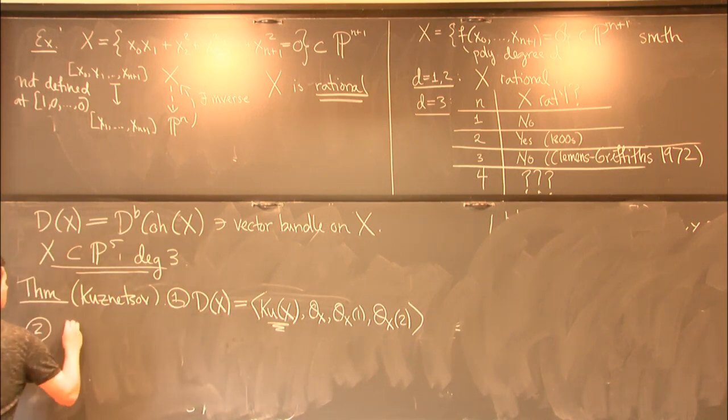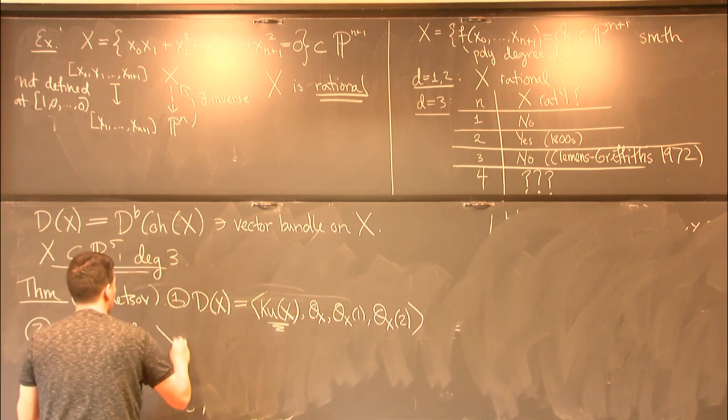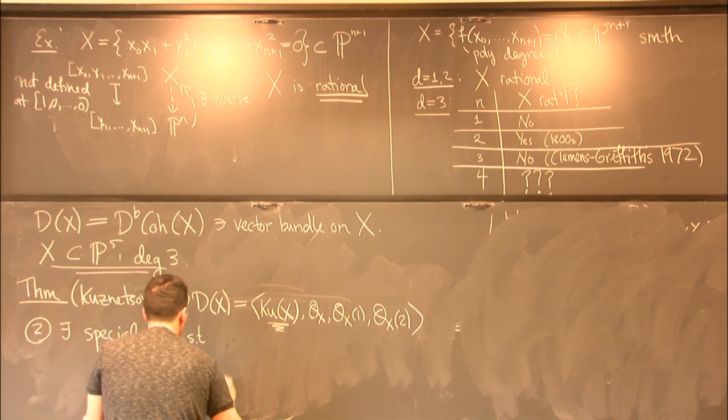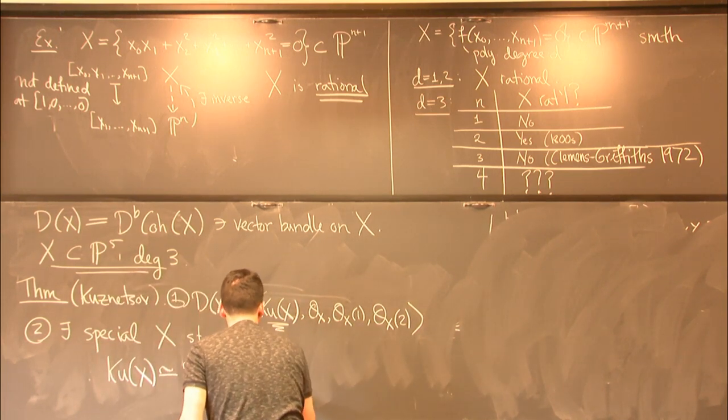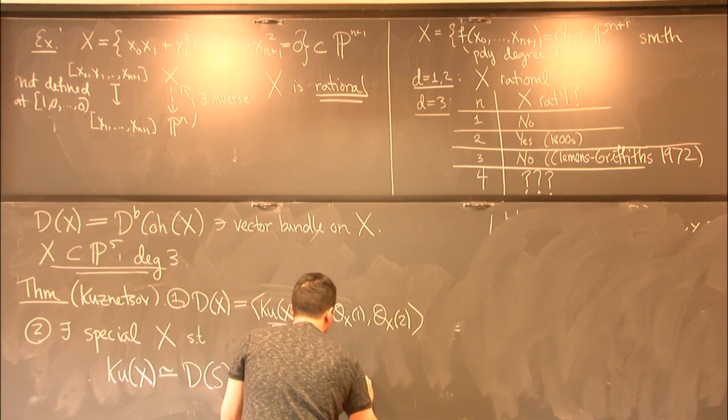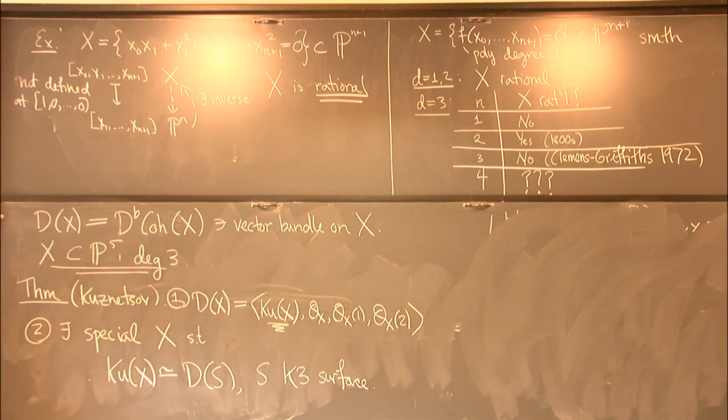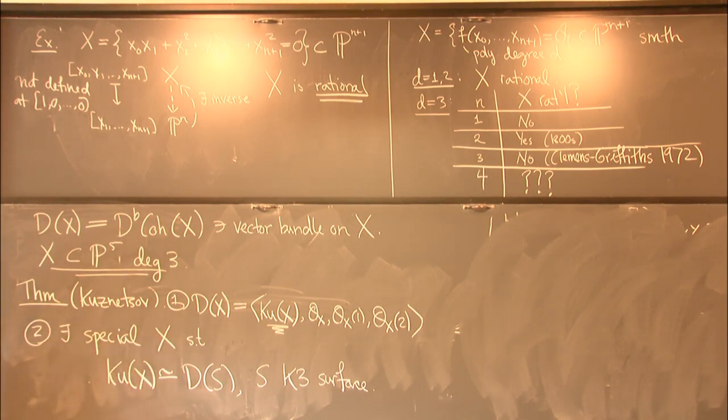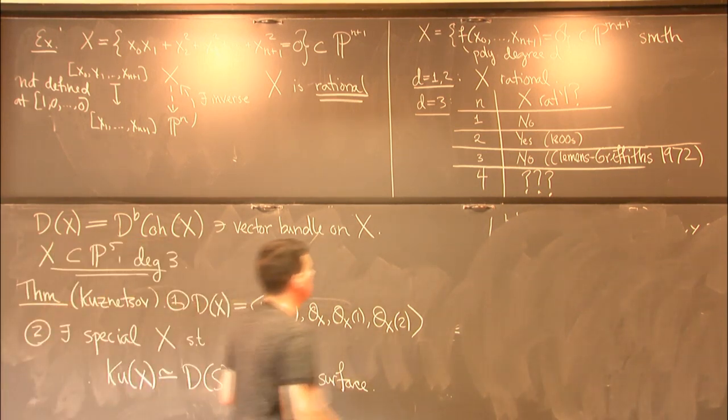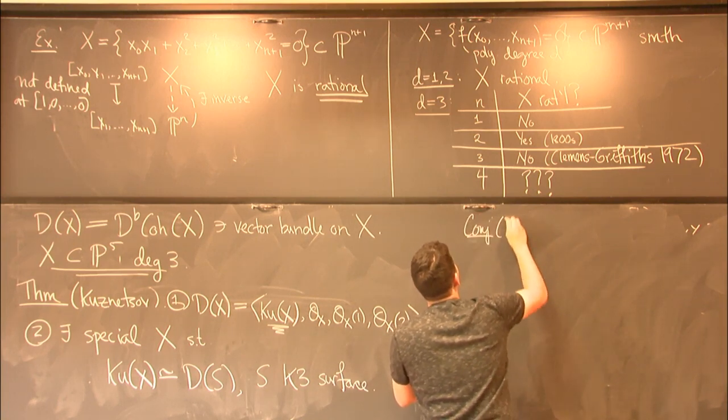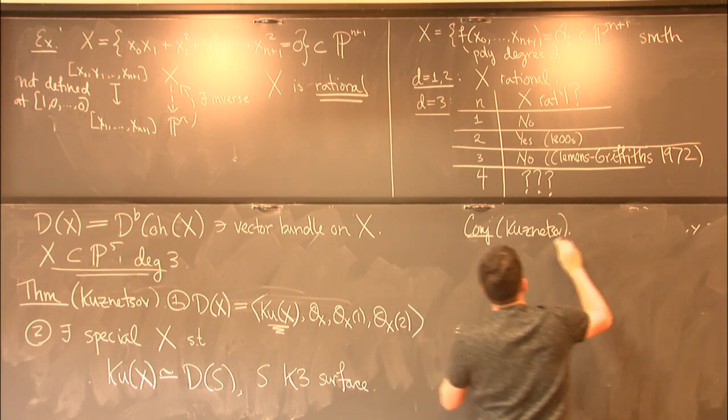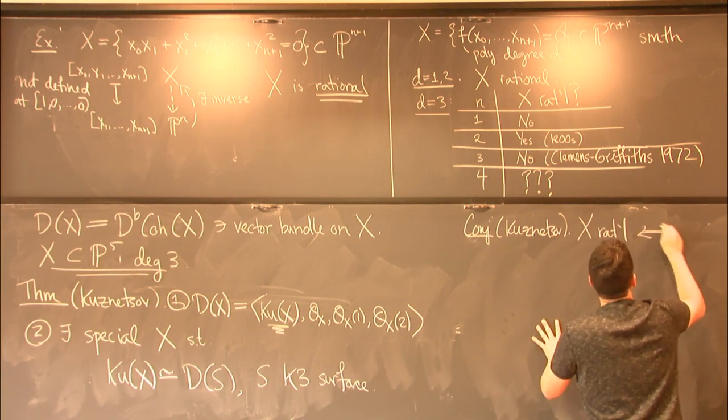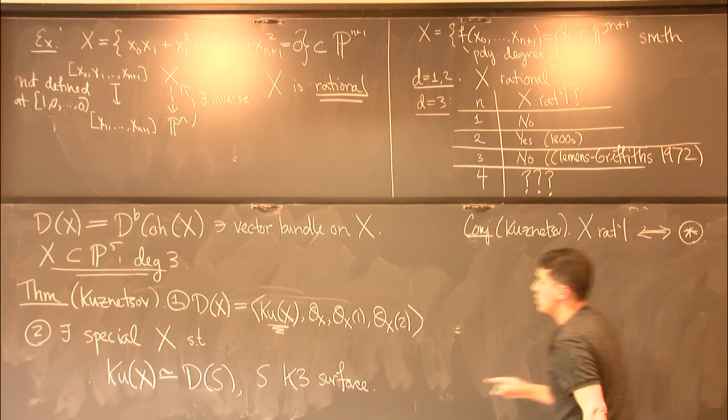So there exists special cubic fourfolds x such that the following condition holds. So such that this category is equivalent to D of s, where s is a K3 surface. OK. There exists special cubic fourfolds x such that there is an equivalence of this category with D of a K3 surface. And moreover, so, Kuznetsov also conjectured that this property characterizes rationality. So he conjectured that a cubic fourfold is rational if and only if this condition star holds. So I'm going to call this star from now on.